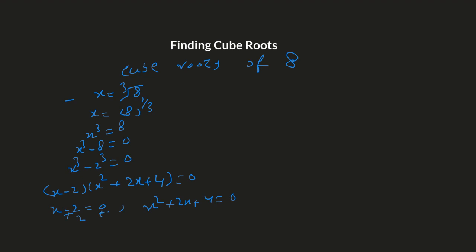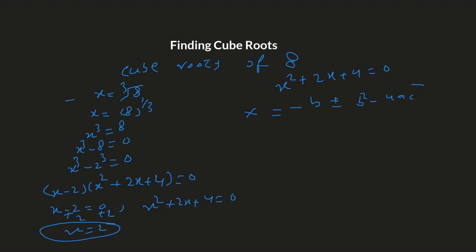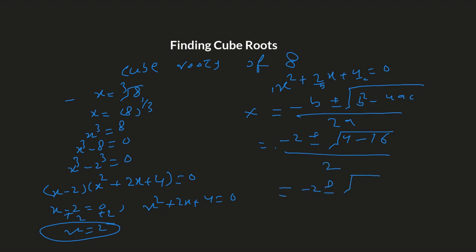From the first factor, X equals two is the first root. For the two remaining roots, we apply the quadratic formula to X squared plus 2X plus four equals zero, where a equals one, b equals two, and c equals four. This gives negative two plus or minus the square root of four minus sixteen, over two, which simplifies to negative two plus or minus the square root of negative twelve, over two.